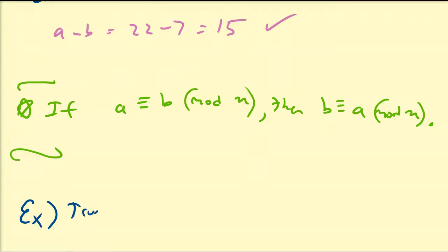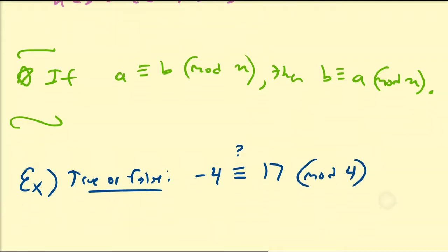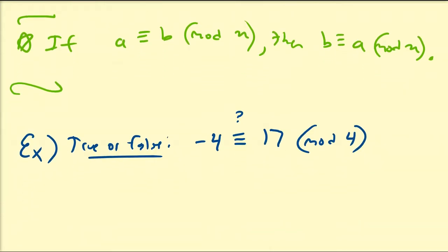True or false. Is negative 4 congruent to 17 modulo 4? So we can look at this from either direction. I'm going to look at it from the direction 17 minus negative 4, the b minus a approach, because I prefer to work with positive numbers, but it really doesn't matter. So 17 minus negative 4, that's going to be 21.